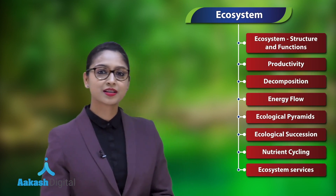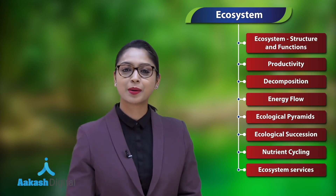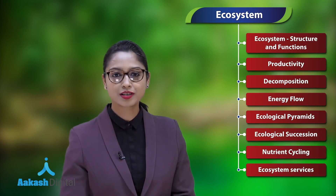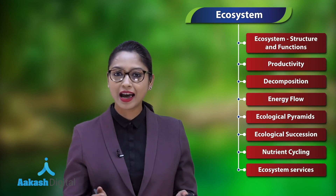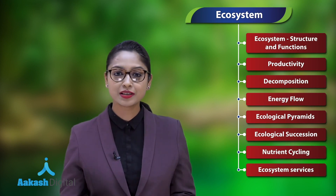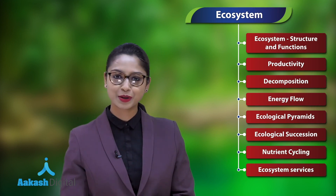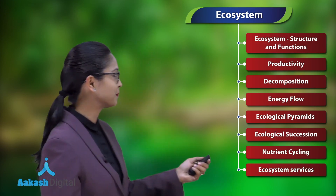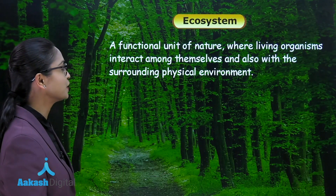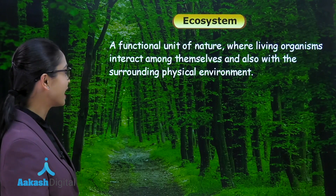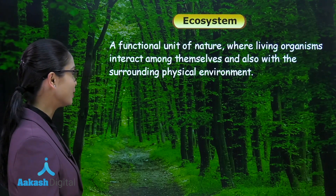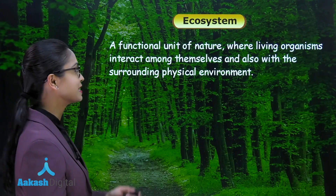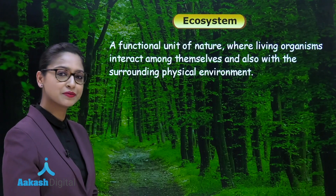The term ecosystem we discussed in the last chapter when we were discussing the levels of biological organization. We discussed that ecosystem is a self-regulating and self-sustaining unit of nature which consists of biotic and abiotic components. Let's look at the definition one more time: ecosystem is a functional unit of nature where living organisms interact among themselves and also with the physical environment.